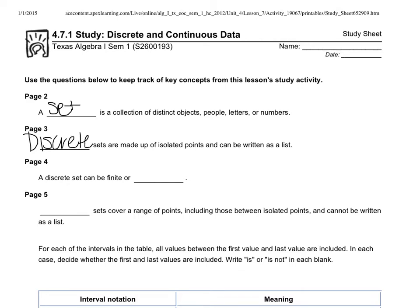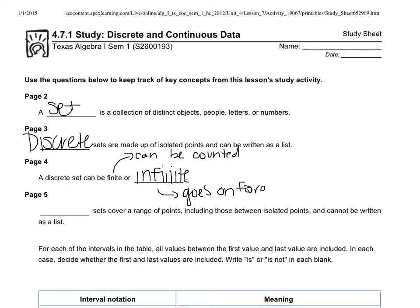Sets are what we call discrete. Discrete sets are made up of isolated points that can be written as a list, so they contain very specific numbers — like the numbers 1, 2, 3, 4, 5, 6, 7, 8, 9, and 10. A discrete set can either be finite or infinite. If something is finite, that means it can be counted — you can say there are ten objects in this set. If it's infinite, that means it goes on forever, like all the whole numbers: 1, 2, 3, 4, 5... all the way to a million.